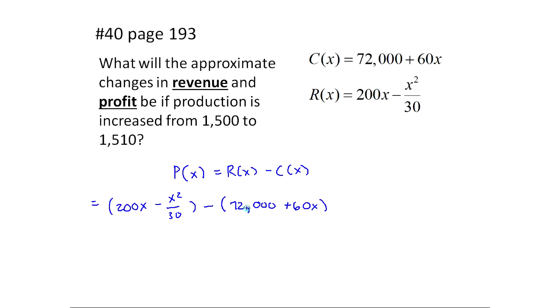Notice what I did. I wrote down my revenue function, wrote down my cost function. The thing I got to be careful about, and now I'm writing down the revenue again, is distributing that negative, so this will be minus 72,000, and then minus 60x. Now I just got to collect like terms. There's only a couple, right? This actually is going to be 200 minus 60, so that's 140x, minus x squared over 30, minus 72,000. And I'm just going to remember, this is the profit function.